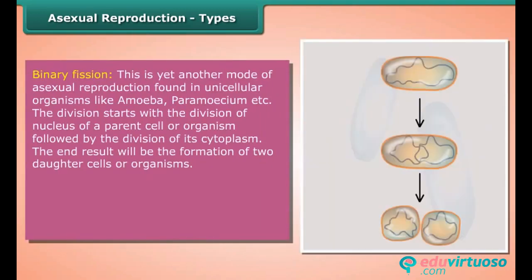Binary fission is yet another mode of asexual reproduction found in unicellular organisms like amoeba and paramecium. The division starts with the division of the nucleus of a parent cell, followed by the division of its cytoplasm. The end result is the formation of two daughter cells or organisms.